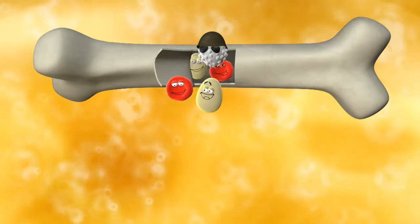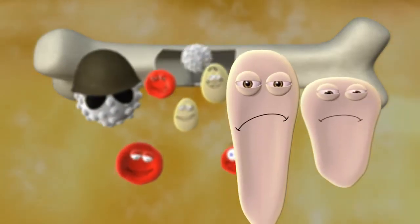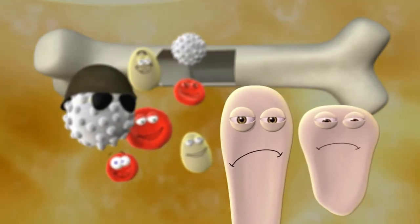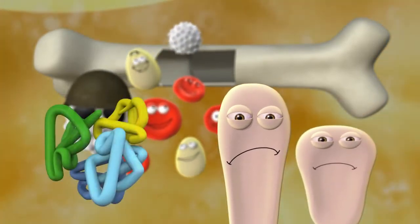Sometimes, however, there is a problem at this factory, and things go wrong. For example, sometimes it can't make red cells with the right helper, the haemoglobin, inside.